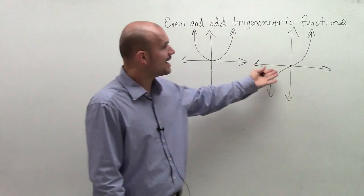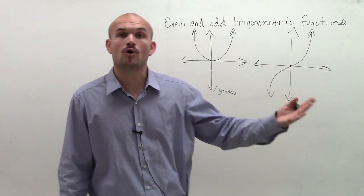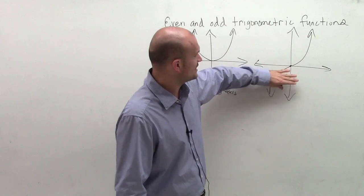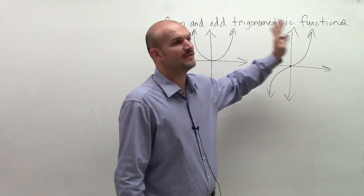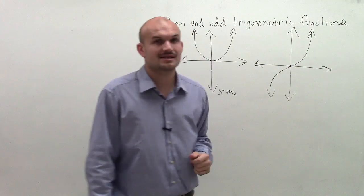Now graphs that are odd are said to be reflective about the origin. Meaning if you reflect it over the x-axis and then reflect over the y-axis, you're going to get the same graph.